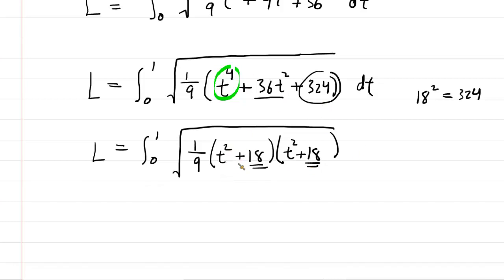if you were to multiply this out, you'd have t squared times t squared, which is indeed t to the 4th. And then you'd have t squared times 18. You'd have another t squared times 18. So, you'd actually have a pair of 18 t squareds. And if you combine those, you would indeed get 36 t squared. And then you would multiply the 18 by 18. And as noted, that's 324. So, lo and behold, it does factor in that manner.